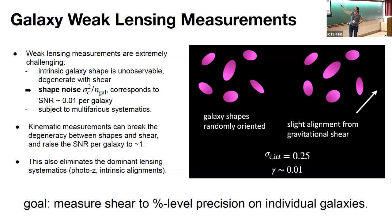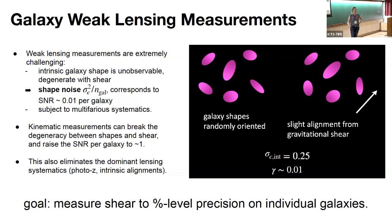This is complicated because the intrinsic shape of galaxies is unobservable and degenerate with shear. We therefore average over many nearby galaxies to average out intrinsic shape, and the residual noise is of order σ_ε² divided by the number of galaxies. In addition, we have many complicated systematics — photometric redshifts, shear calibration, intrinsic alignments — as we have to push to fainter and fainter galaxies to increase statistical power.